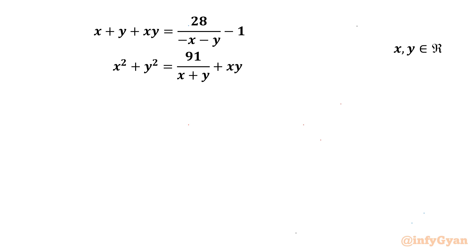Welcome to Infigyan, my dear friends. In today's video we have one very interesting system of equations where we will be solving for the real values of x and y. The equations are: x plus y plus xy equal to 28 over negative x minus y minus 1, and x squared plus y squared equal to 91 over x plus y plus xy.